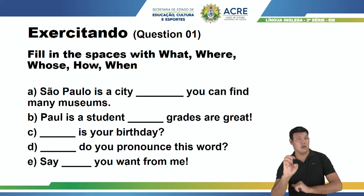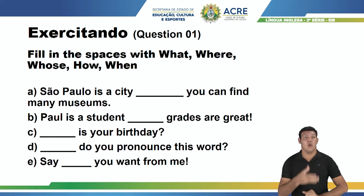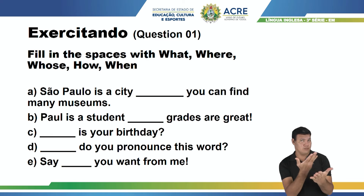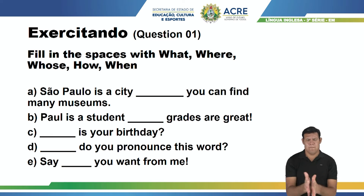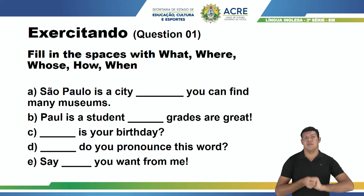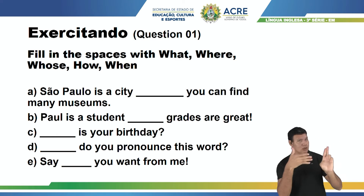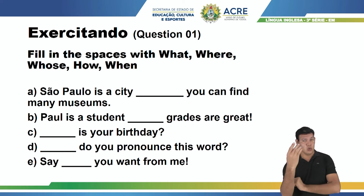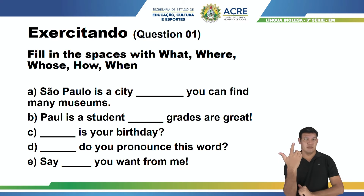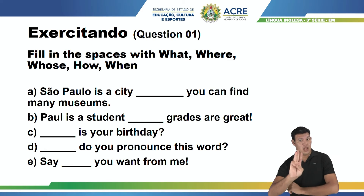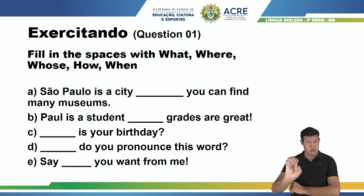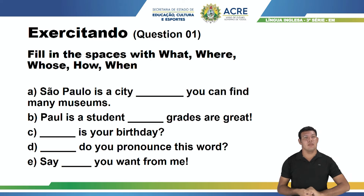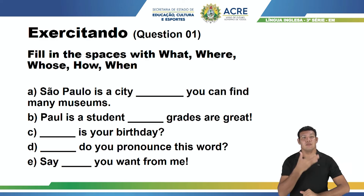Letter B: Paul is a student — Paul é um aluno — grades are great — as notas são excelentes. Eu estou falando de uma pessoa. Quando falo de pessoa, posso usar o who, mas o who não está aí. No caso, é o whose, porque além de me referir a uma pessoa, ainda tem o sentido de posse — as notas dele. Paul is a student whose grades are great. Paul é um aluno cujas notas são excelentes.